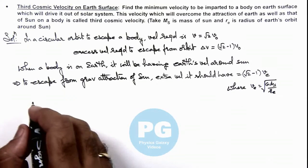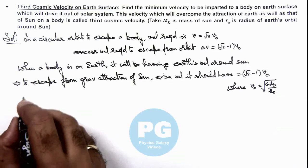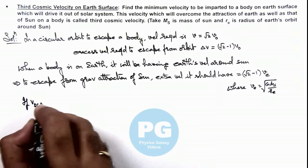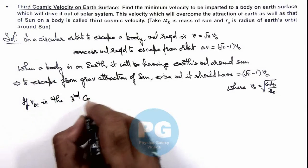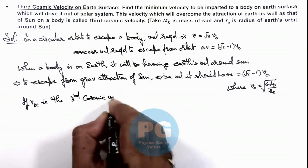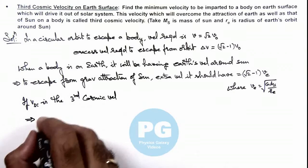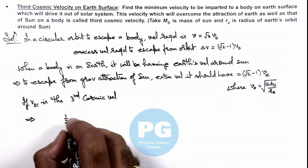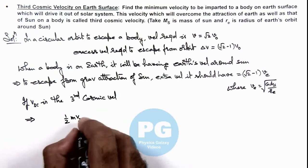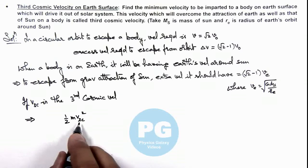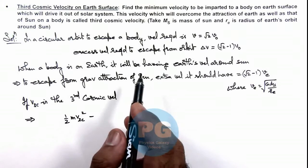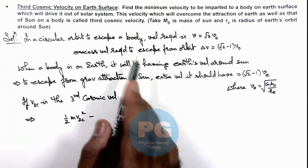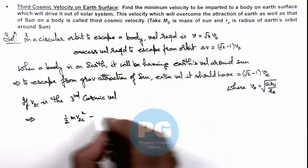So here we can say if v_3c is the third cosmic velocity, this implies it should be such that half m v_3c square is the kinetic energy imparted to the body, from which to overcome the gravitational attraction of Earth we need energy.